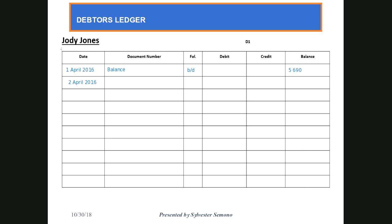Under the document number, we need to come up with the source document. Which source document do we use when we charge interest? The best way to look at it is to check under which journal we normally record the interest. We normally record interest charged on accounts under the general journal. The only source document we can use under the general journal is called the general voucher. If they gave you a voucher number, you'd say general voucher and write the number — for example, JV7 or JV3. Because I don't have source document numbers, I'm just going to put the source document as GJ. Because we are charging Jody interest, we need to increase his account. Jody is a debtor — debtors increase on the debit side. So I'm going to enter 35 rand.